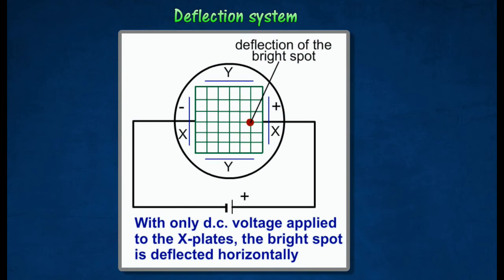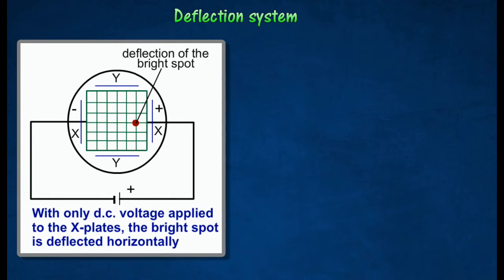X plates are two vertical plates that can deflect the electron beam horizontally. When a direct current voltage is applied, the light spot will be deflected horizontally towards the plate at positive potential.